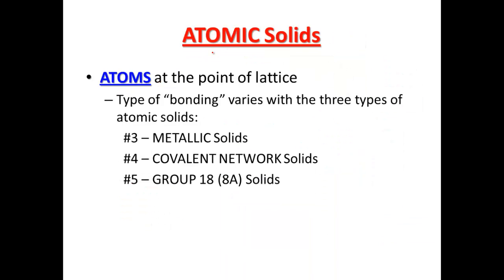Atomic solids is not one of the major fives, because this one actually breaks down into the next three right here. But if atoms are the points of the lattice, they're collectively called the atomic solids. Now what it comes down to, is it metal? Is it non-metal? Or is it special ones, where it's just the group 18 elements, the noble gases? So we'll go into these in a little more detail. The type of bonding that we're going to see here varies with the three different types of atomic solids.